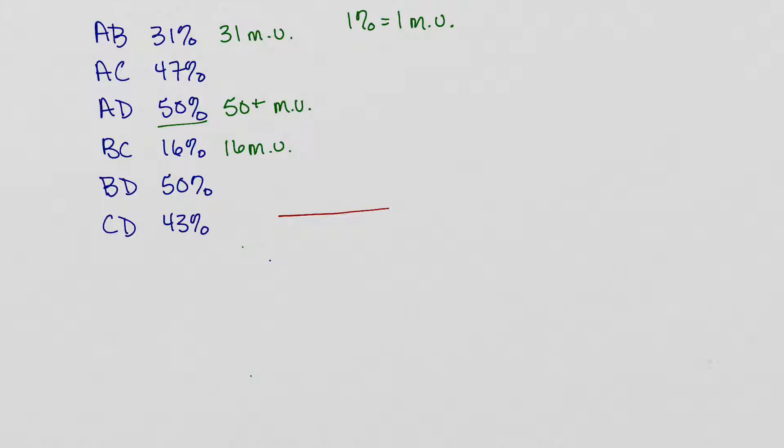So I'm going to draw my chromosome here and I like to start with the ones that are the closest together. In this case it's going to be B and C, so I'm going to take this information and I can see that B and C are 16 map units apart from each other.